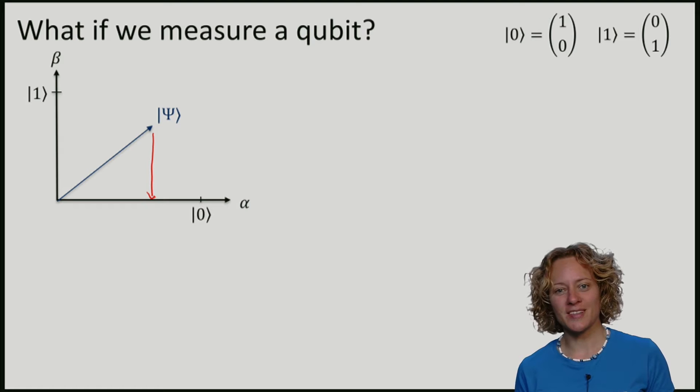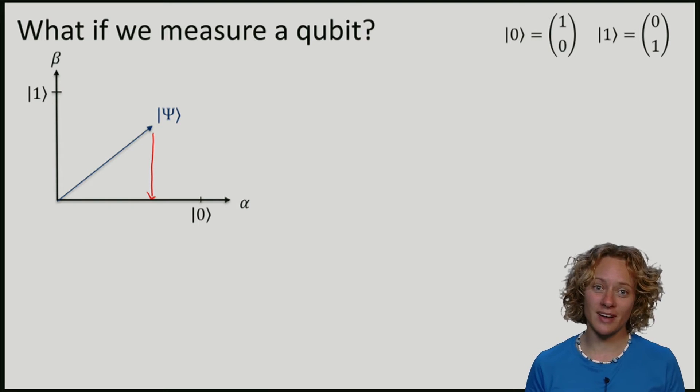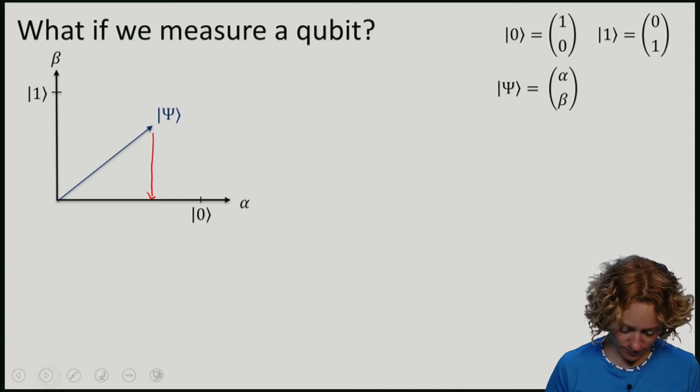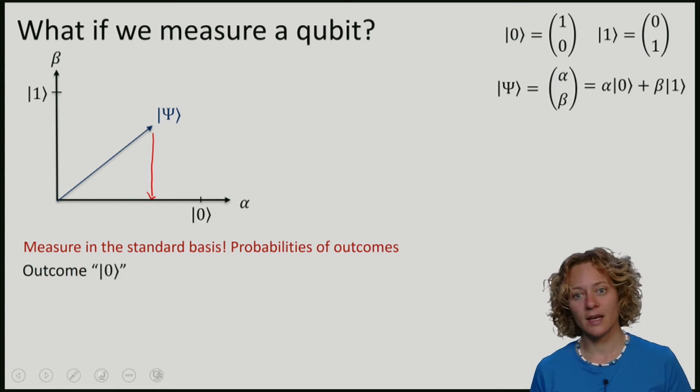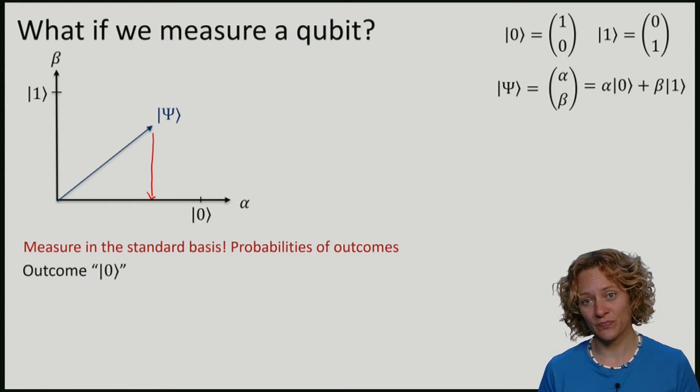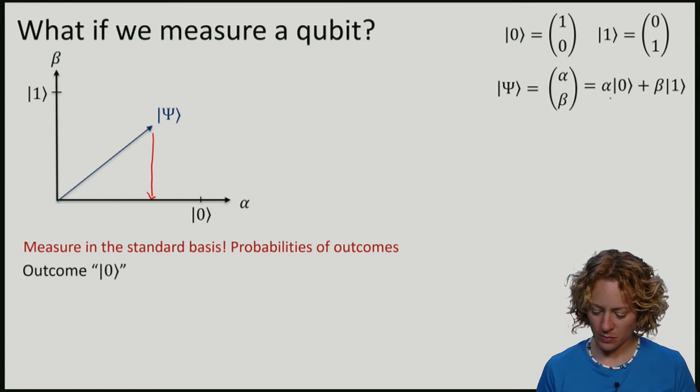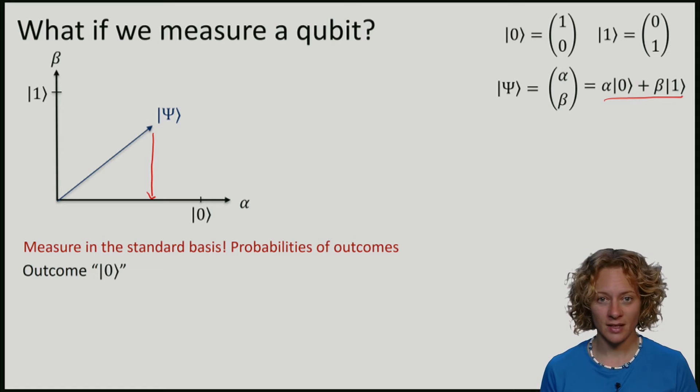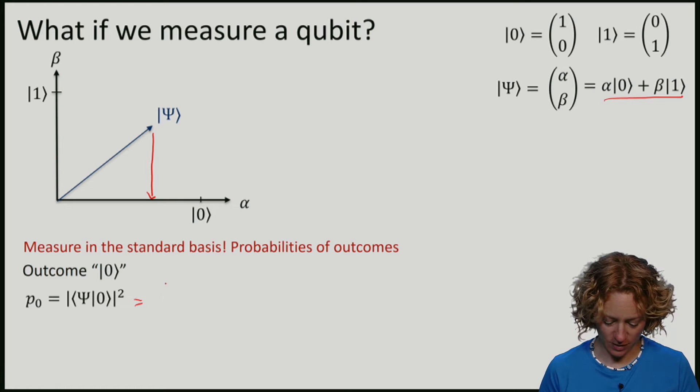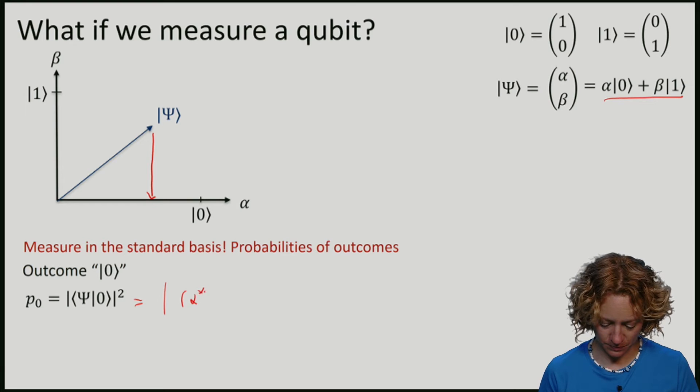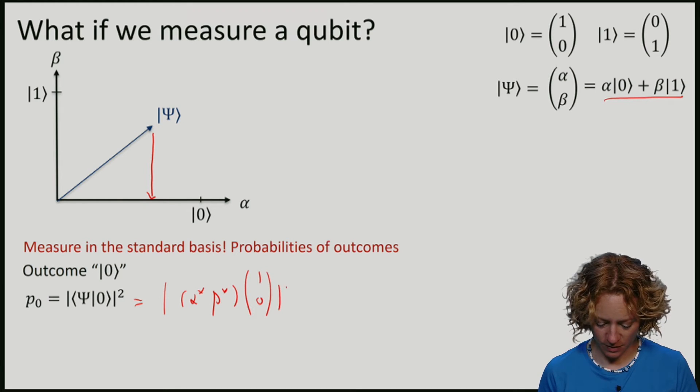So we will compute this by considering the inner product between psi and 0. If we compute the inner product in our example, we have alpha 0 plus beta 1. So let me write this out. Remember that this is the bra, so this is the conjugate transpose. This is the zero vector, so what we will get is alpha squared.